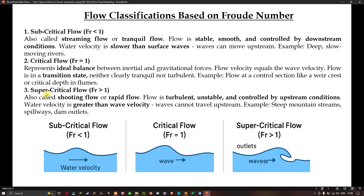Supercritical flow occurs when Fr > 1 — also called shooting flow or rapid flow. The flow is turbulent, unstable, and controlled by upstream conditions. Water velocity is greater than wave velocity, so waves cannot travel upstream. Examples include steep mountain streams, spillways, and dam outlets. To summarize visually: subcritical flow has Fr < 1, critical flow has Fr = 1, and supercritical flow has Fr > 1.